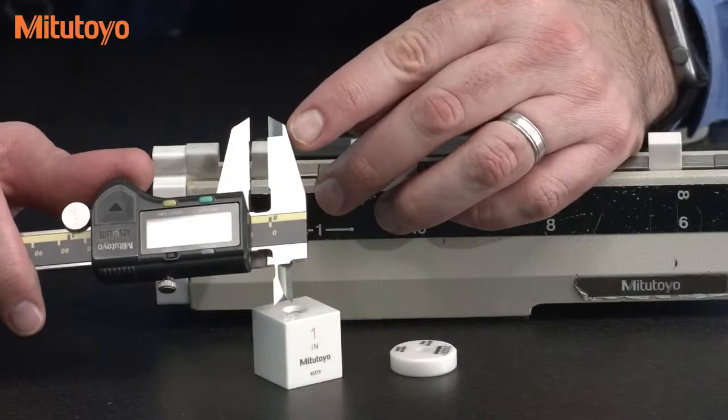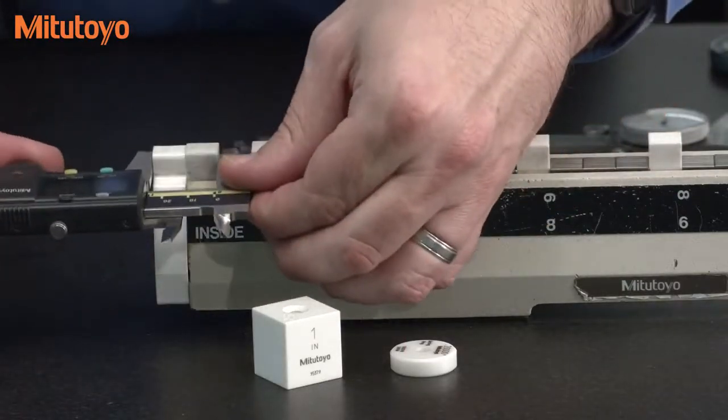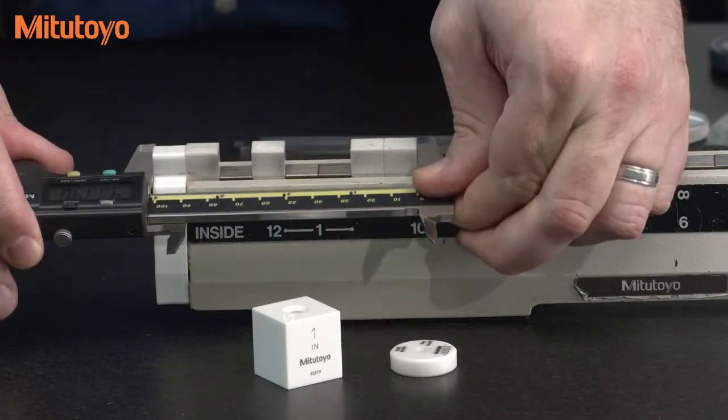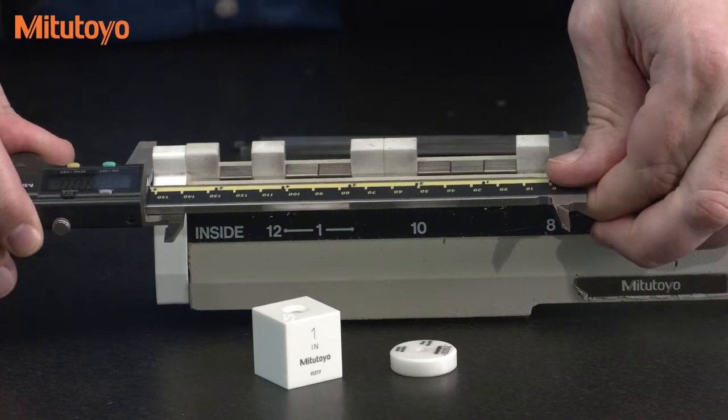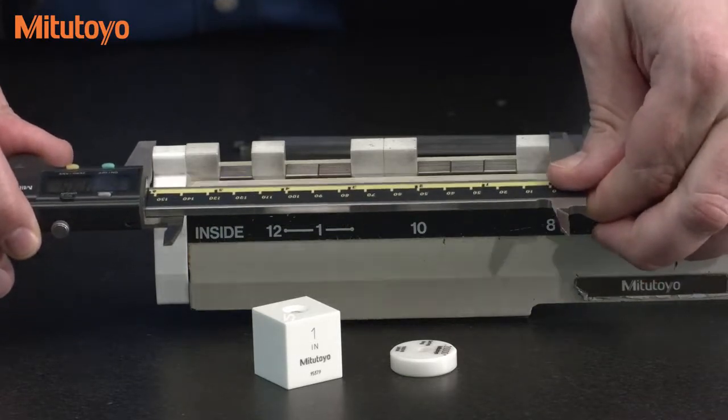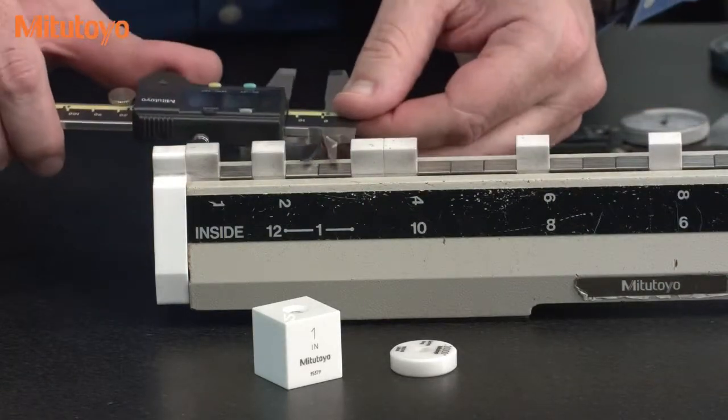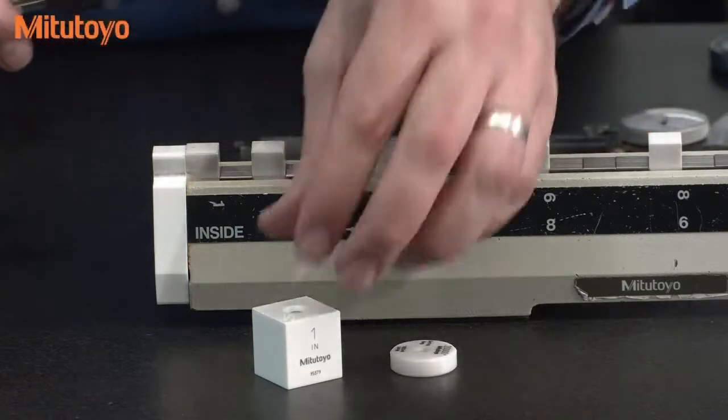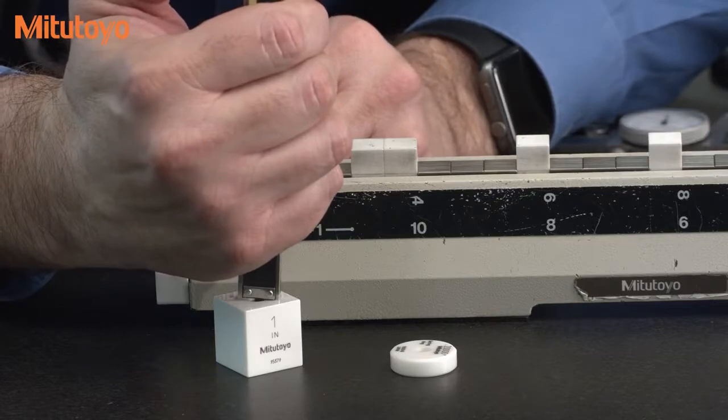For the outside jaws we take a series of measurements over the measuring range: one inch, two inch, four inch, six inches, and we also vary where we are across the jaws. Then we do an inside measurement, one inch like this, then for the depth bar we do a measurement like that.